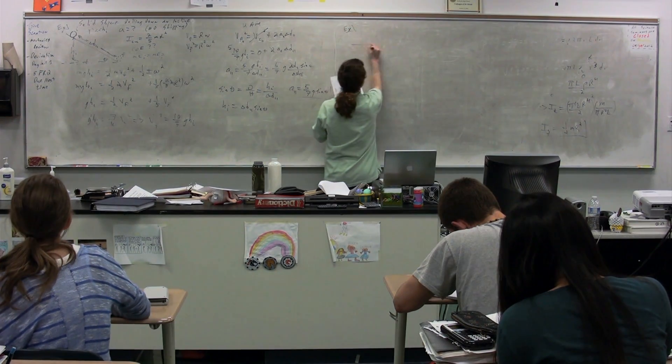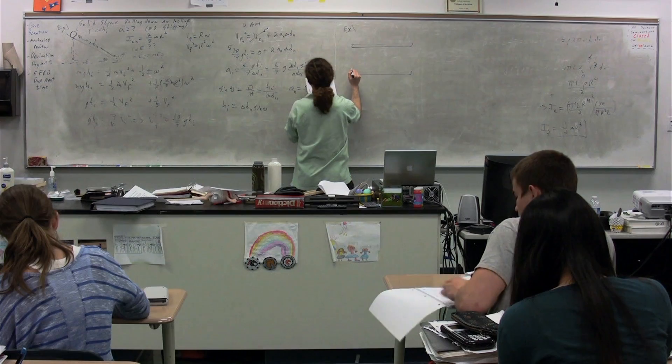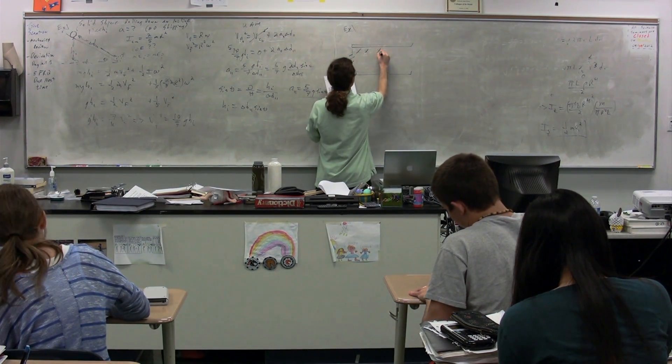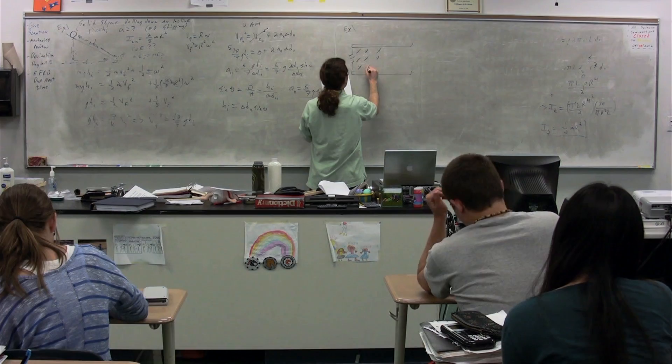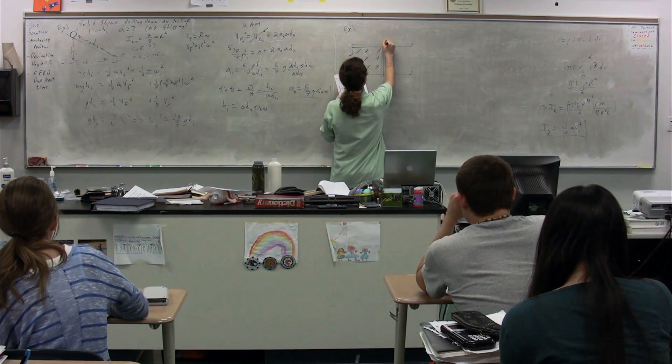We have two parallel conducting rods that are connected by a resistor. Between the two of them, we have a constant magnetic field, which is what direction, class? Into the board.